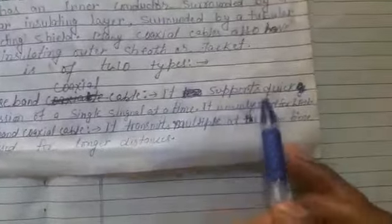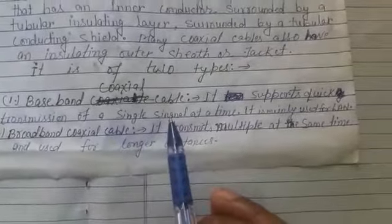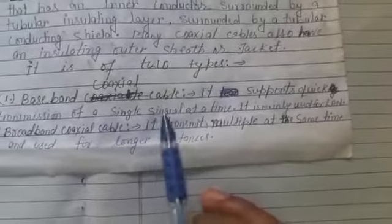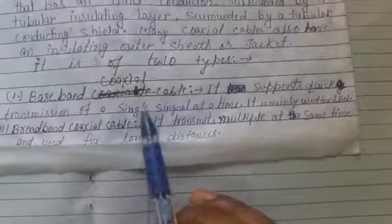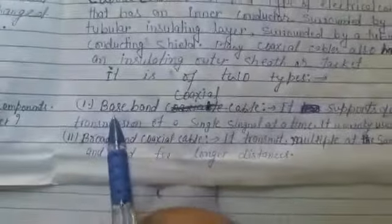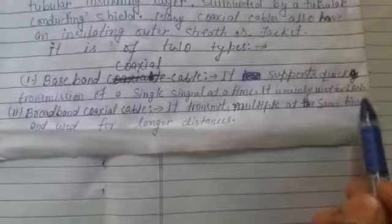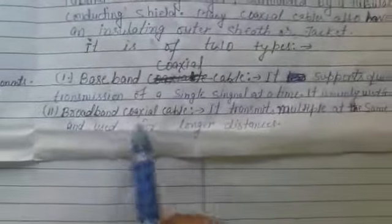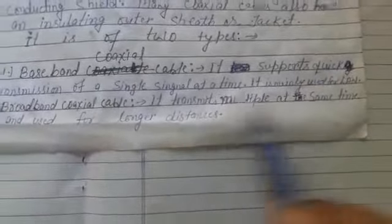The first type is baseband coaxial cable and the second is broadband coaxial cable. Baseband supports transmission of a single signal at a time and is mainly used for local area networks. Broadband coaxial cable transmits multiple signals at the same time and is used for large distances.